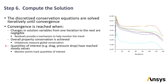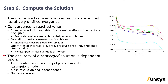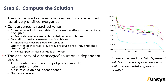To monitor convergence, we typically set up additional plots to track how quantities of interest change during iterations. It is critical to ensure the solution is converged. However, once it is, it's also important to realize that the accuracy of the converged solution depends on many factors, including the appropriateness of the physical models, the assumptions made, the mesh resolution, mesh independence, and numerical errors. When we have a converged and mesh-independent solution for a well-posed problem, it will provide useful engineering results.